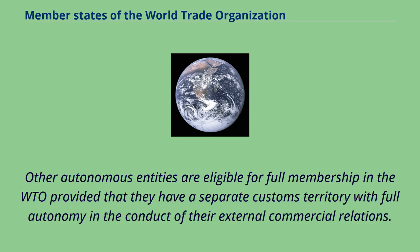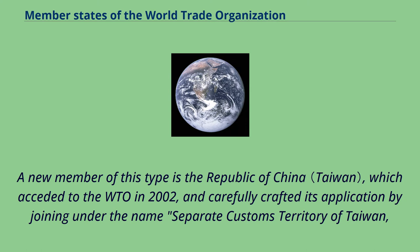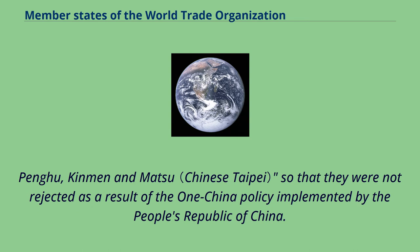Other autonomous entities are eligible for full membership in the WTO provided that they have a separate customs territory with full autonomy in the conduct of their external commercial relations. Thus, Hong Kong became a GATT contracting party by the now-terminated sponsorship procedure of the United Kingdom, as did Macau. A notable member of this type is the Republic of China, which acceded to the WTO in 2002, carefully crafting its application by joining under the name Separate Customs Territory of Taiwan, Penghu, Kinmen and Matsu, so as not to be rejected due to the one-China policy implemented by the People's Republic of China.